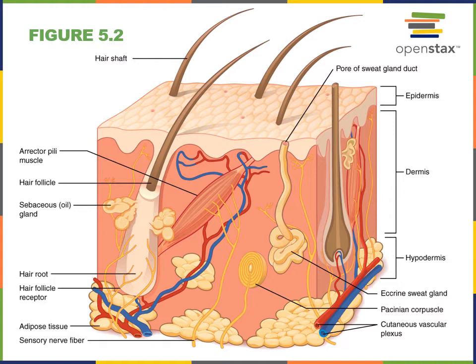There are two major layers of connective tissue in the dermis: a papillary layer and reticular layer. The papillary layer is composed of areolar connective tissue that is adjacent to the epidermis and provides a route for lots of small blood vessels and capillaries that provide nutrients and carry waste away from the cells in the deep layers of the epidermis.